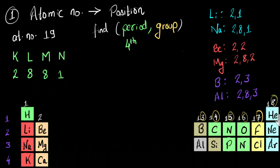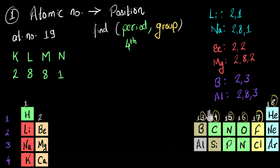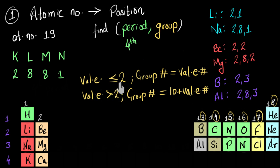Except for helium, of course, which has only two electrons. Based on this, if the given element has one or two valence electrons, it belongs to group 1 or group 2. If it has three or more valence electrons, since groups 3 to 12 are not in our syllabus, the group number equals 10 plus the valence electron number. So the rule is: if valence electrons ≤ 2, group number = valence electrons; if valence electrons > 2, group number = 10 + valence electrons. Note this rule only applies when we exclude elements in groups 3 to 12.